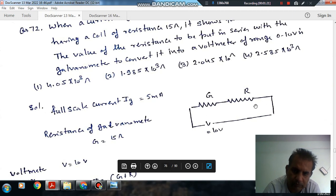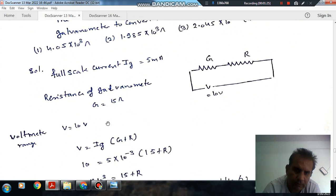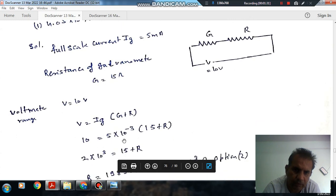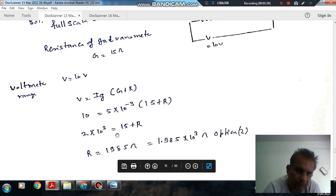The potential difference across the combination will be 10 volts. So 10 volts equals the current times total resistance: 10 = (5 × 10⁻³) × (15 + R). Solving this: R = (10 / 5×10⁻³) - 15 = 2000 - 15 = 1985 ohm.